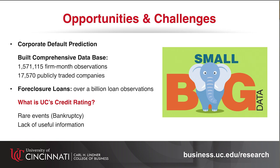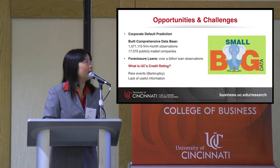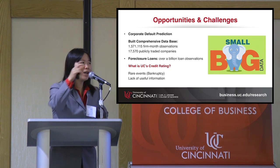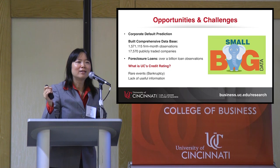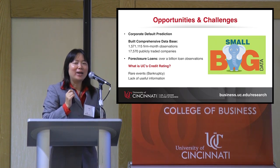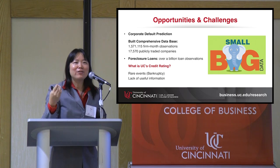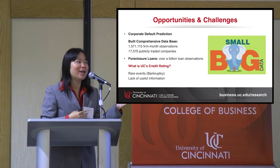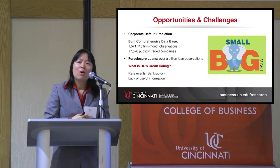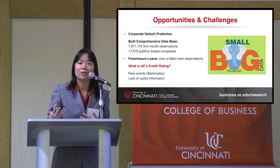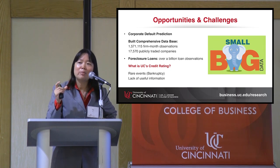Let me pause and ask a quick question: what is UC's current credit rating? Single A? Double A? Moody's rating is actually Double A — upgraded from single A. Think about this: we don't think there's much chance for higher education or government entities like UC to default, but we still need to assign credit ratings and estimate the probability of default. One challenge is that there are not so many events of interest — like bankruptcy cases — to observe.